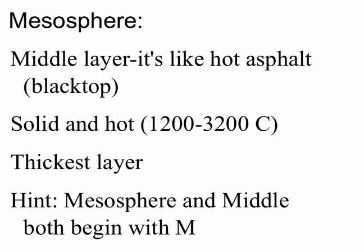Then we get to the middle layer, the mesosphere. It's like hot asphalt, like blacktop — very hot, so it's moving very slowly, but it's solid and it's cooler. It's the thickest layer. Remember that the mesosphere and middle both begin with the letter M. It's solid, like a blacktop driveway, but if you watch a blacktop driveway over time, it does tend to slowly move — when it gets more hot, it kind of expands, and when it gets colder, it shrinks.